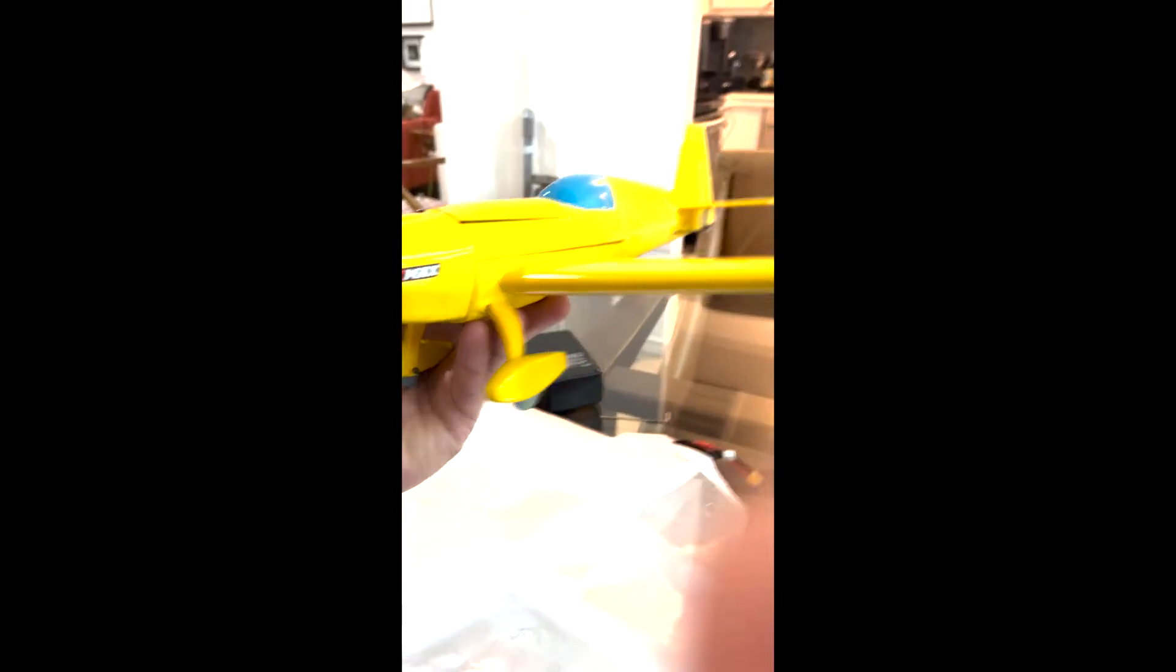So what do you do when you break a 3D printed airplane? Well, this is an Extra 300 that I had a rough landing in. When you take it apart, you can see that right there at the wing joint I cracked the 3D print. So what, you throw it away? No, I'm going to show you how to fix it.